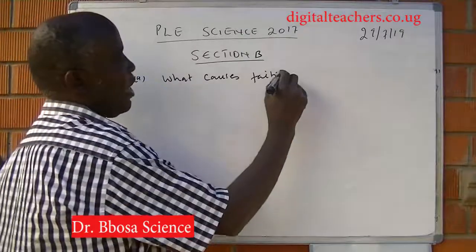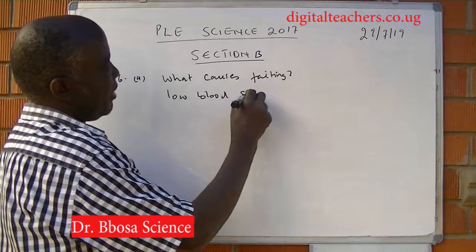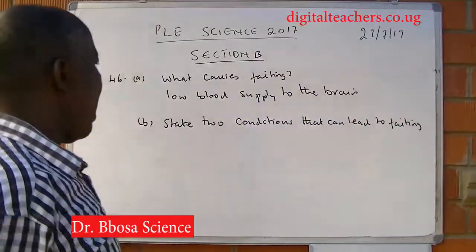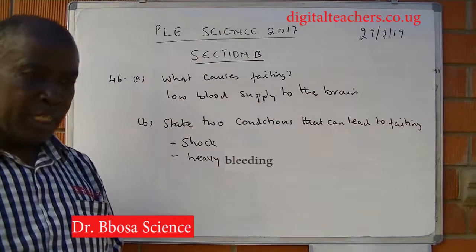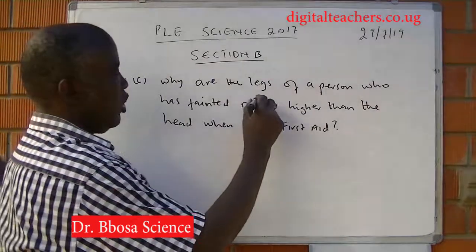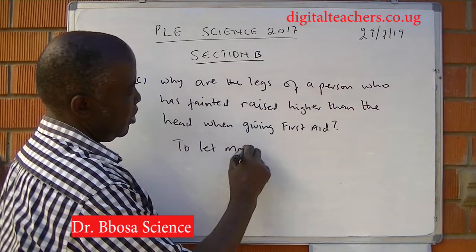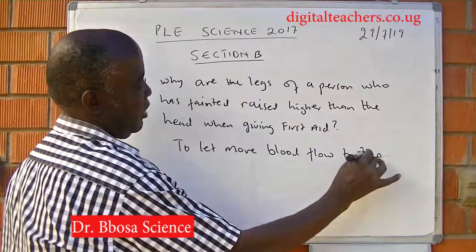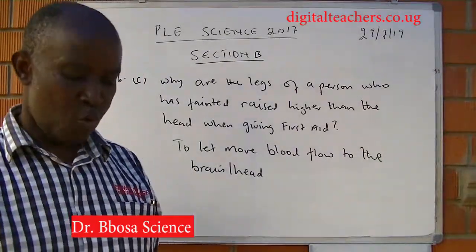Number 46a: what causes fainting? That is low blood supply to the brain. Part B: state two conditions that can lead to fainting — shock and heavy bleeding. Part C: why are the legs of a person who has fainted raised higher than the head when giving first aid? To let more blood flow to the brain, because the brain is contained within the head.